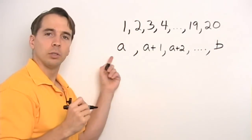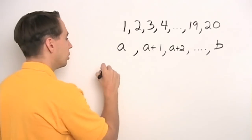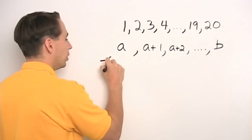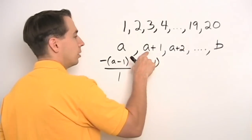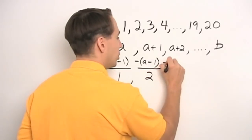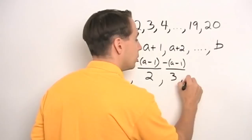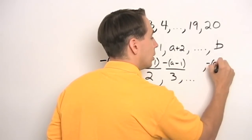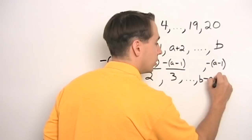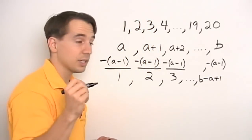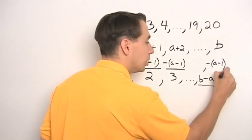We want to find a formula for how many numbers are in this list. We'll do the same thing we did in all the other problems: turn it into a list that starts at one. To turn a into one, we just subtract one less than a, and that gives us one. When we subtract this from the next number in the list, we get two. Keep going and we get exactly what we expected: one, two, three, four. But where does it end? When we subtract (a minus one) from b, we get b minus a plus one — because subtracting a negative is a positive one. Our list goes from one up to b minus a plus one, and that is our formula.